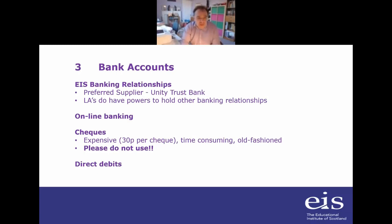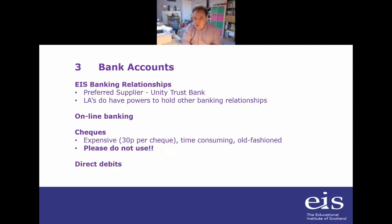Turning to banking relationships. Our preferred supplier for banking is Unity Trust Bank. All our central HQ banking is now through Unity Trust. For those who may not know anything about Unity Trust, they're not a major high street bank — they're a relatively small bank, largely owned by the trade union movement. In fact, EIS does have a small shareholding in the bank itself.